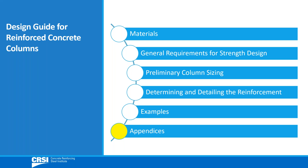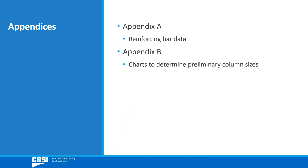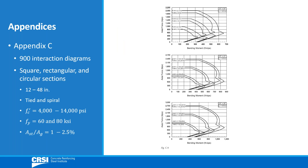Finally, the three appendices contain information that can be used in everyday practice. Reinforcing bar data is given in Appendix A, and Appendix B, as mentioned previously, contains numerous charts to determine preliminary column sizes. 900 actual interaction diagrams are given in Appendix C, which cover a wide range of column sizes and material properties, as noted here. They can be used to quickly determine cross-sectional dimensions and required longitudinal reinforcement for columns subjected to both moments and axial forces.